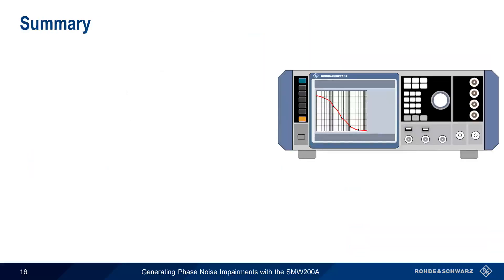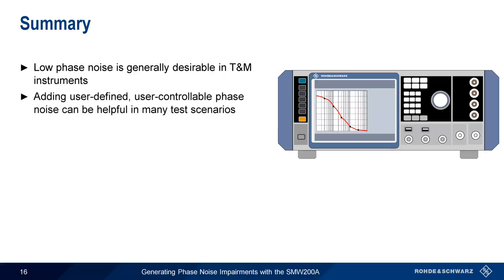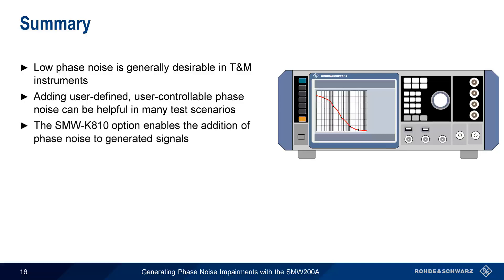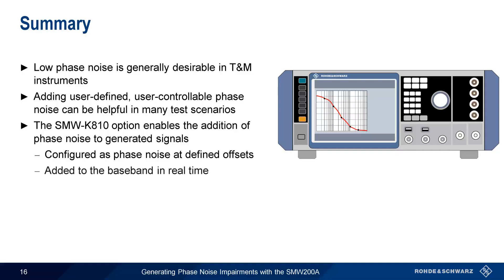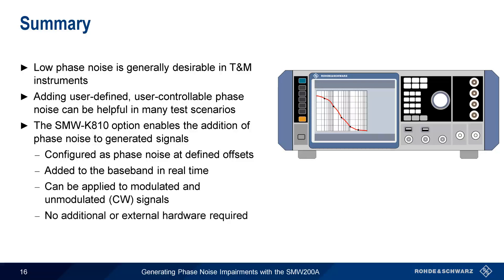Let's end with a brief summary. Generally speaking, low phase noise is desirable in test and measurement instruments such as signal generators. However, there are many test scenarios where adding user-defined, user-controllable phase noise can be helpful. On the SMW, the K810 Enhanced Noise Generation option enables phase noise to be added to generated signals. This phase noise is configured via a simple graphical user interface in which the added phase noise is defined at user-selected offsets. This phase noise is then added to the baseband signal in real-time, and this can be done for signals of any modulation type without the need for additional or external hardware. This concludes our presentation Generating Phase Noise Impairments with the SMW-200A. If you'd like to learn more, please see the links in the video description. Thanks for watching.